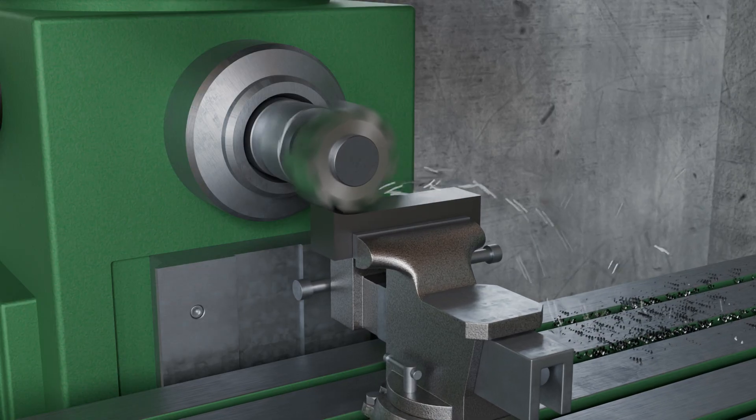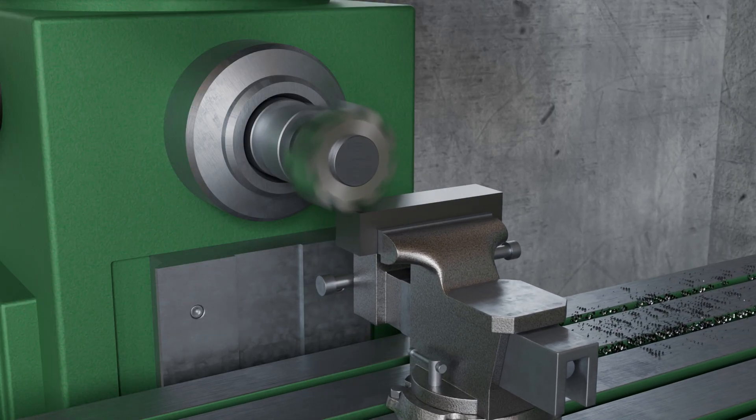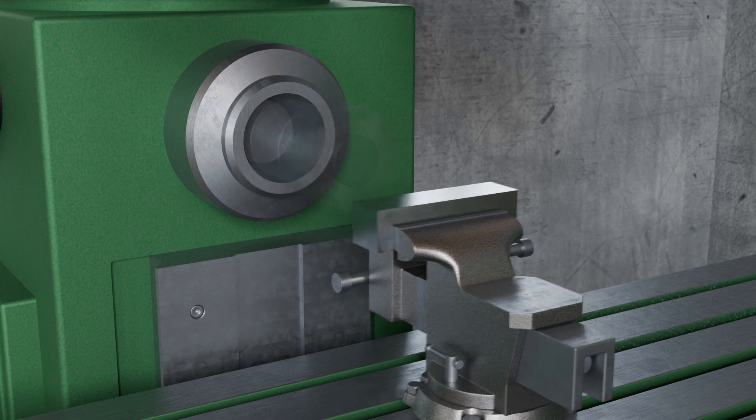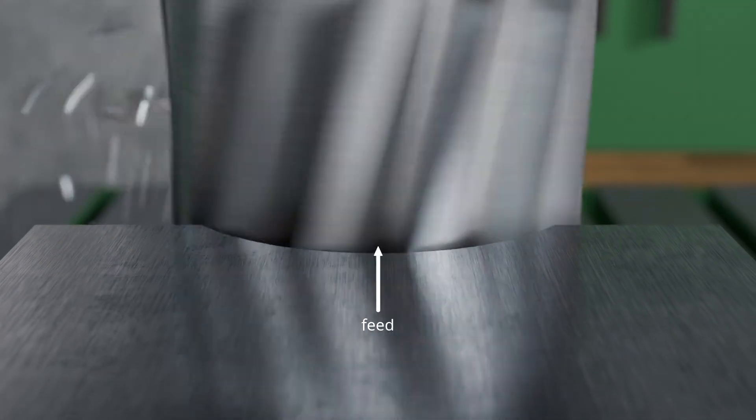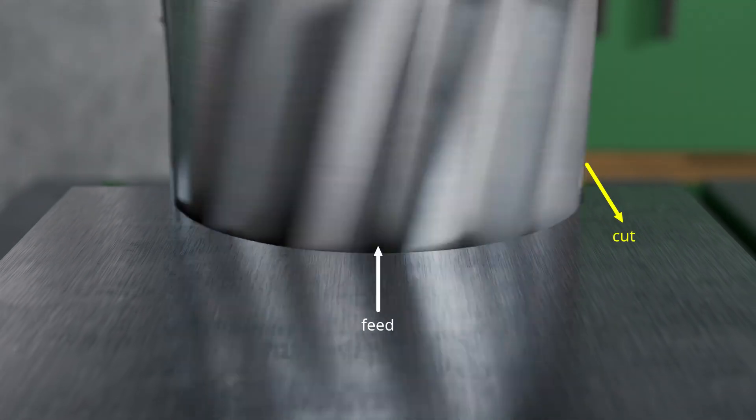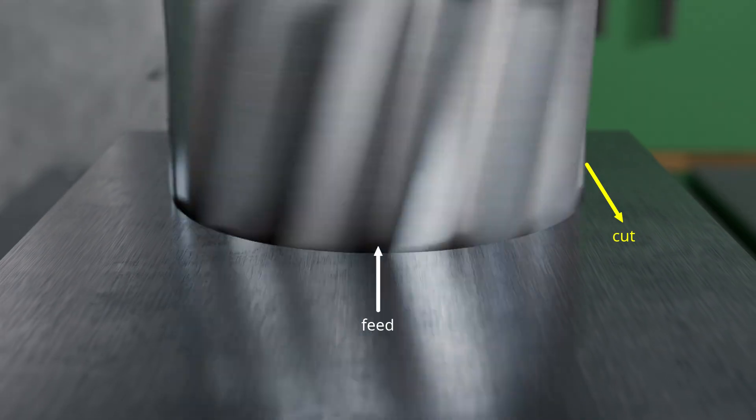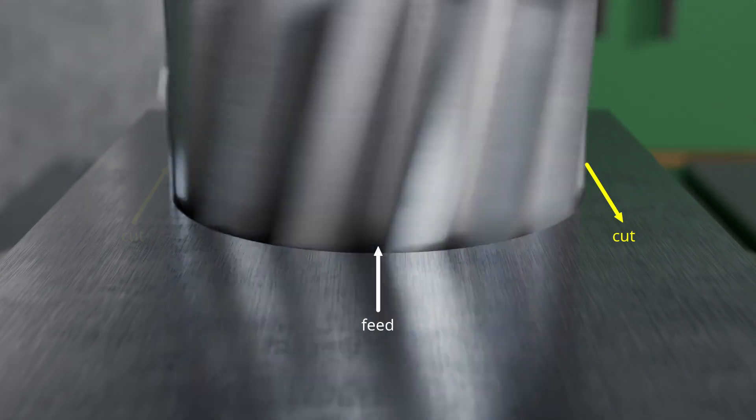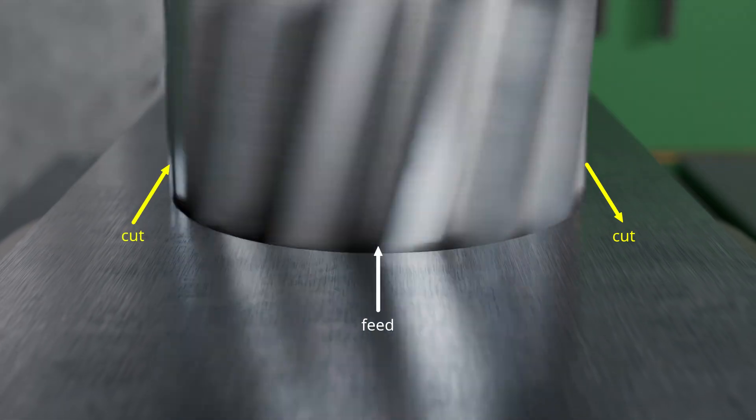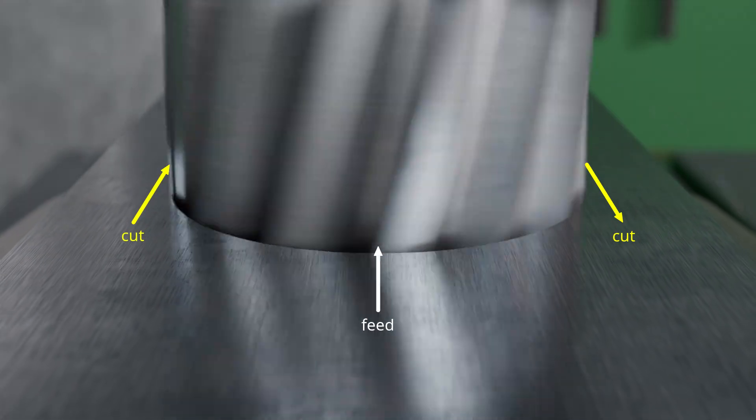Climb and conventional milling do not always occur separately, but can also occur simultaneously. One such situation arises, for example, during face peripheral milling of a groove. In this case, on the right-hand side, the cutting speed is directed opposite to the feed, meaning conventional milling takes place on this side. On the left-hand side, however, the cutting speed is aligned with the feed direction, resulting in climb milling.